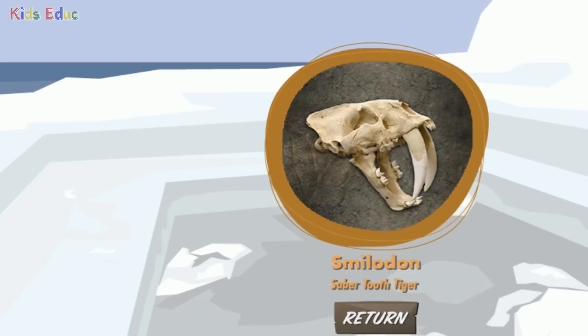Smilodon, saber-toothed tiger. This is a really exciting discovery. This is a Smilodon, more commonly known as a saber-toothed tiger. You can see two large teeth in this fossil. What is amazing about the Smilodon is that humans and Smilodons once shared the planet together. These scary-looking cats went extinct only about 11,000 years ago, which is not very long when it comes to the history of the Earth.